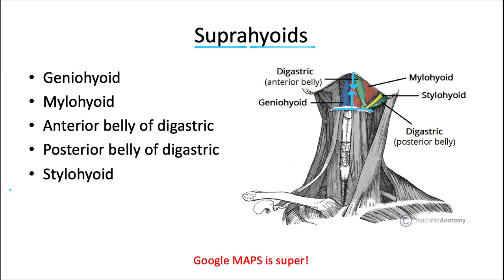How do I remember these names? I remember the saying that Google Maps is super. The G stands for geniohyoid. All of these letters refer to these four muscles, and 'super' helps me remember suprahyoid.